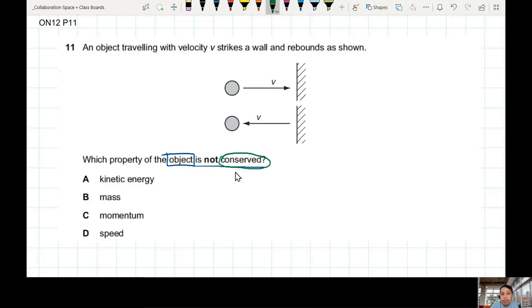Conserved means it is same before and after. When we say energy is conserved, energy is same before and after. Momentum conserved - momentum is same before and after. Before, after, conserved means the same. Not conserved. Let's see. So we have a before, which is the first one. Before you hit the wall. After you hit the wall. So when they say conserved, then you see before, after. Is it same or not?